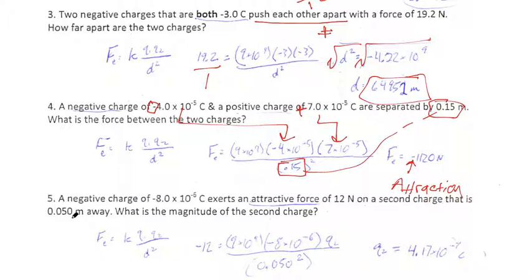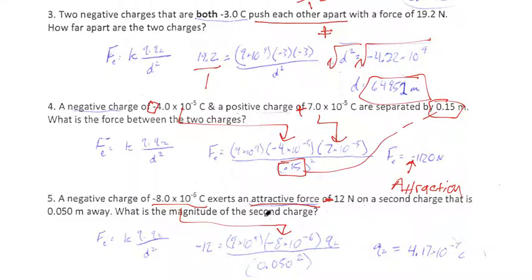Number 5: a negative charge of negative 8 times 10 to the negative 6 exerts an attractive force of 12 Newtons on a second charge that is 0.05 meters away. What's the magnitude of the second charge? I know it's an attractive force of 12, so negative 12. K is always 9 times 10 to the 9th. I know my first charge, I don't know the magnitude of the second charge so I leave that as Q, and then 0.05 squared for my distance. Use cross multiplication — negative 12 over 1 doesn't change anything mathematically but helps conceptually. Go ahead and figure out that numerator, cross-multiply, divide, and you end up with Q equals 4.17 times 10 to the negative 7th.